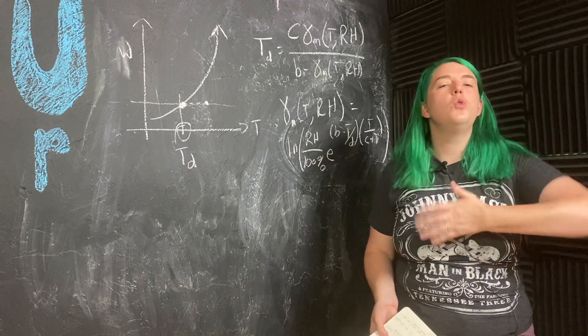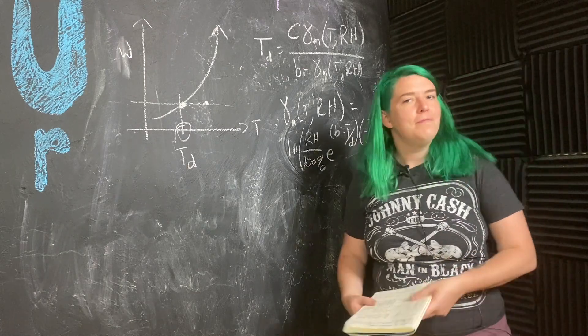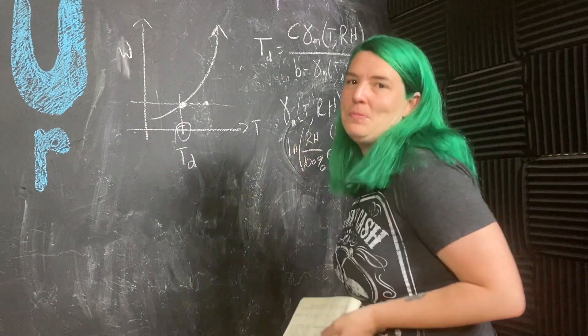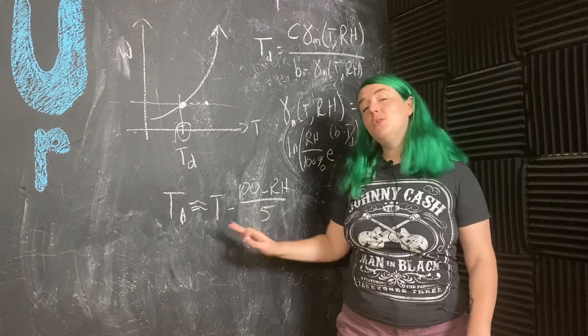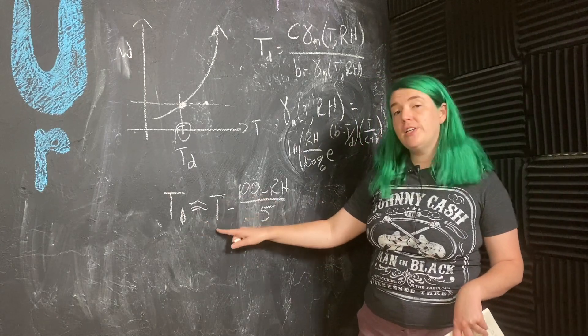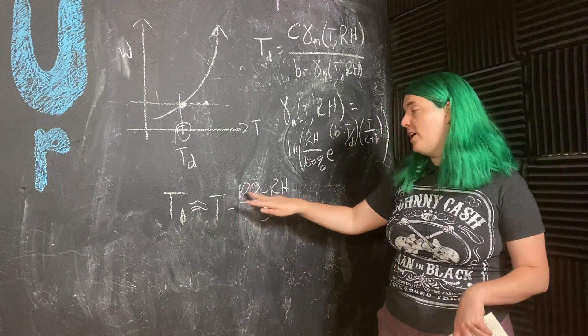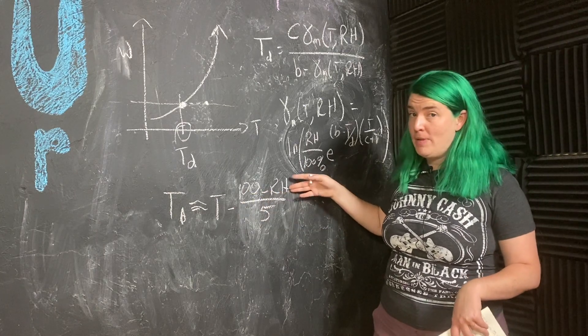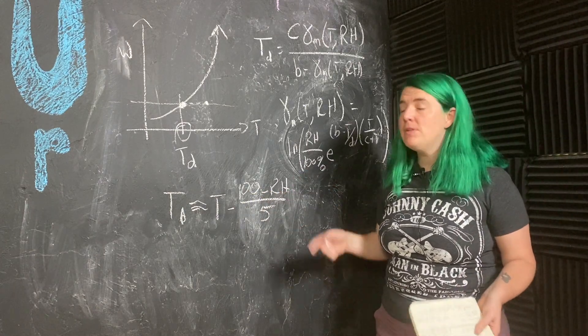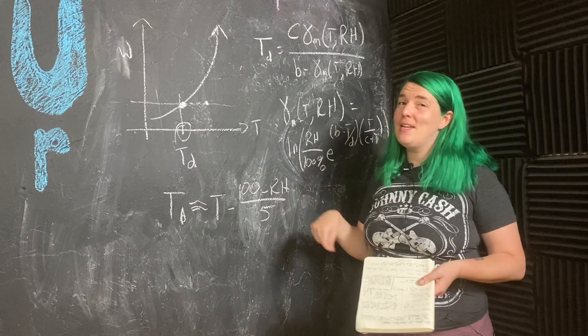So we actually have a rule of thumb that is pretty good for most things you or I would be interested in. You can get pretty close to dew point temperature by taking current temperature minus 100 minus relative humidity divided by five. Note that your temperature here should be in Celsius.